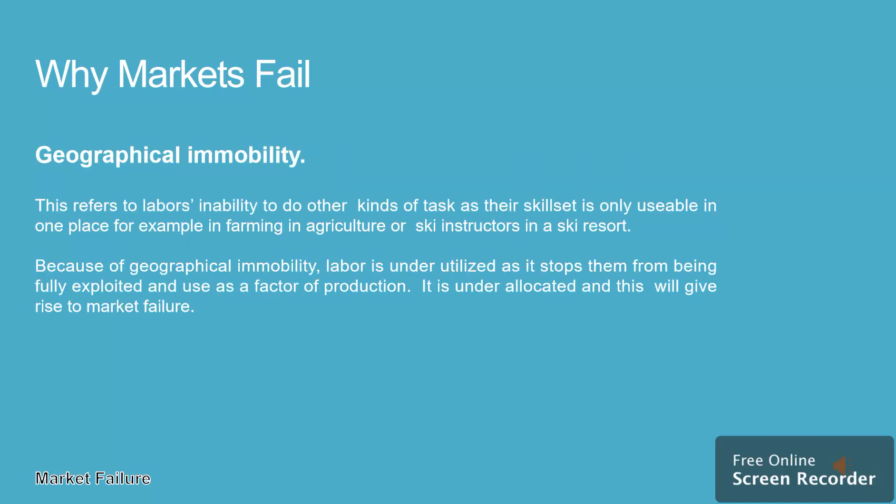Geographical immobility refers to labor's inability to work in other locations, as their skill set is only usable in one place — for example, farming in agriculture or ski instructors at a ski resort. Because of geographical immobility, labor is underutilized, stopping it from being fully exploited as a factor of production. It is under-allocated, and this will give rise to market failure.